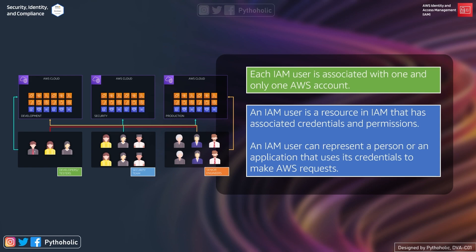An IAM user is a resource in IAM that has associated credentials and permissions. An IAM user can represent a person or an application that uses its credentials to make AWS requests. If you are working on a deployment where you need to perform operations on other accounts, you don't need to log into each instance across all AWS accounts — you can create roles, assume the role, and with the right permissions perform the operations you want.